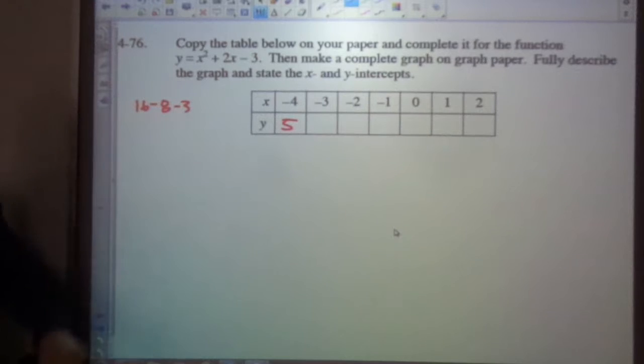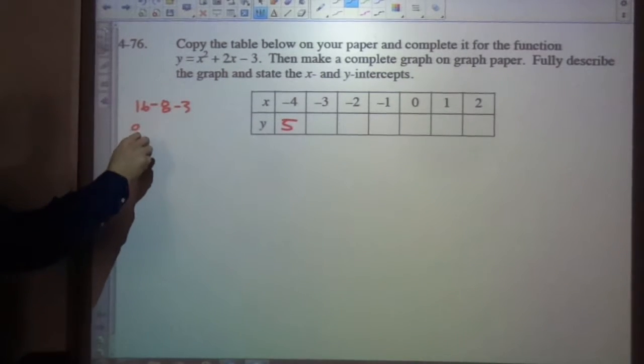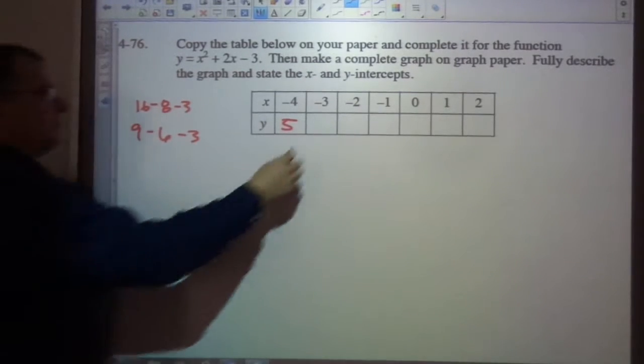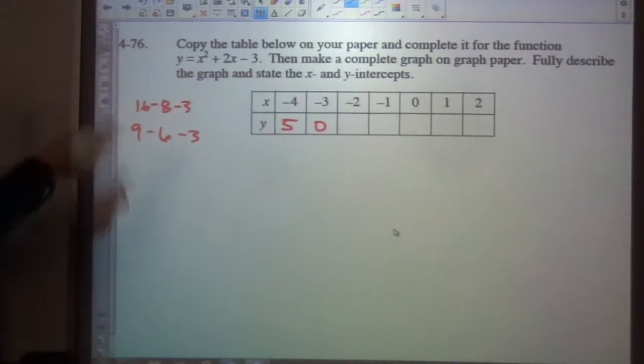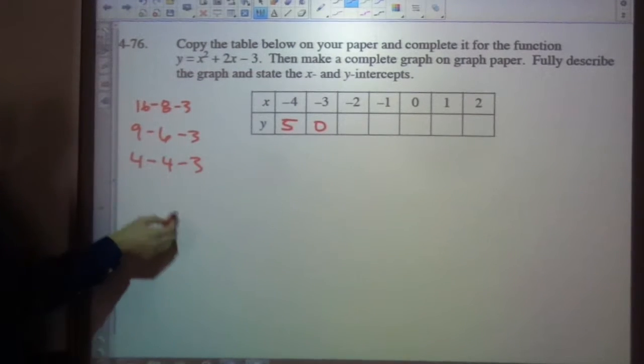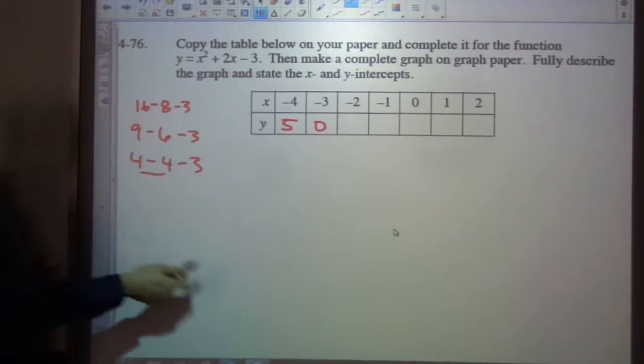Negative 3 squared is 9 minus 6 minus 3, that's 0. Negative 2 squared is 4 minus 4 minus 3. These make 0, negative 3.